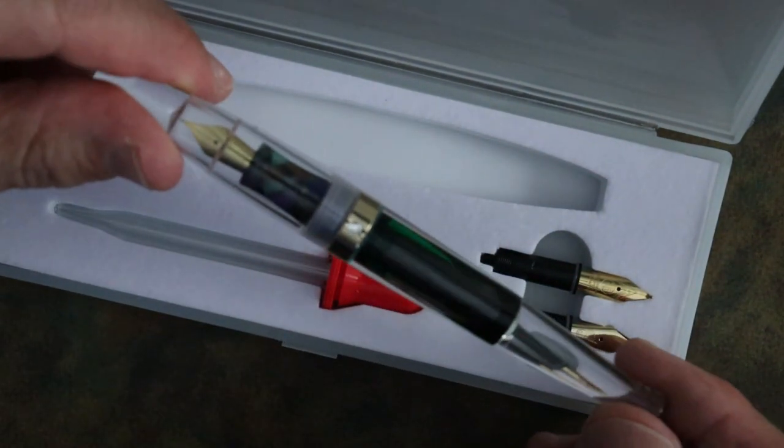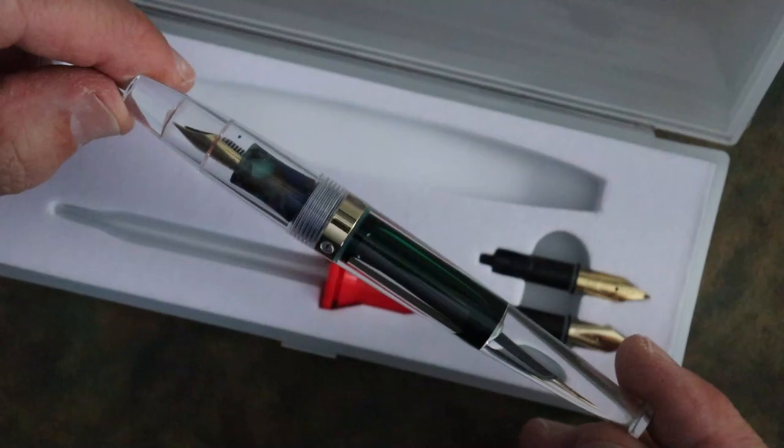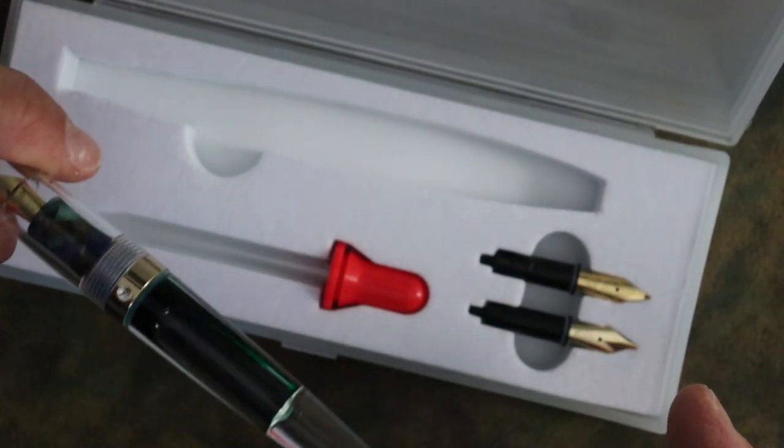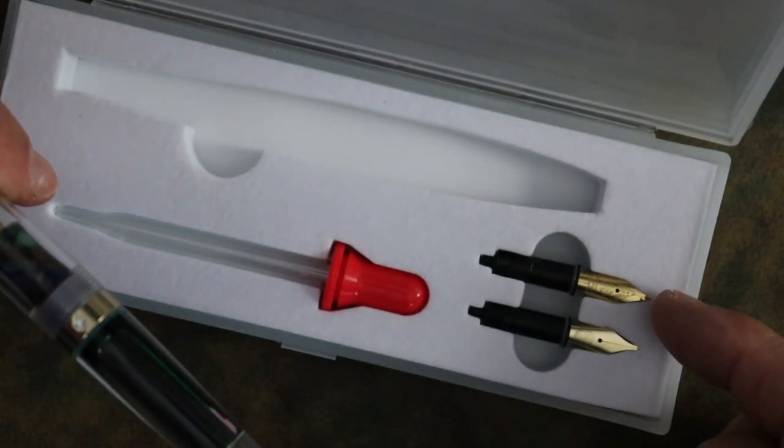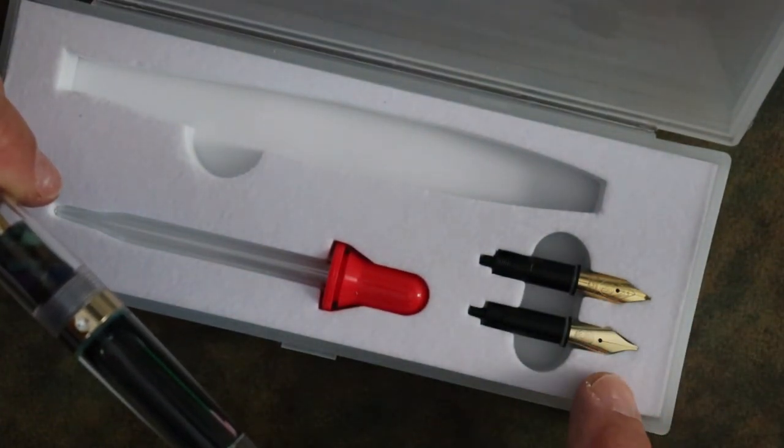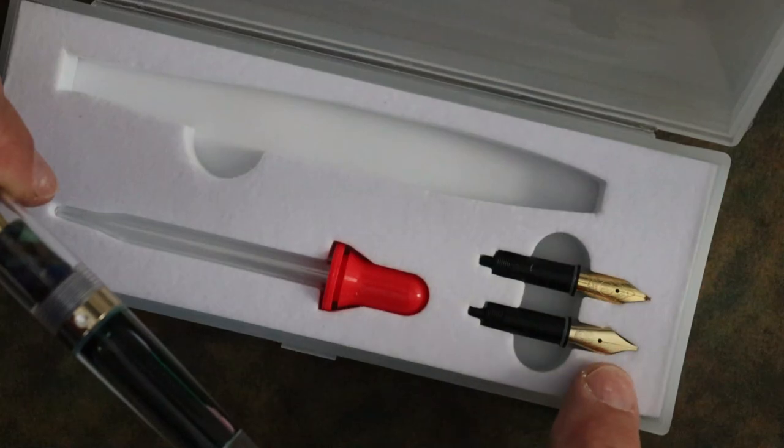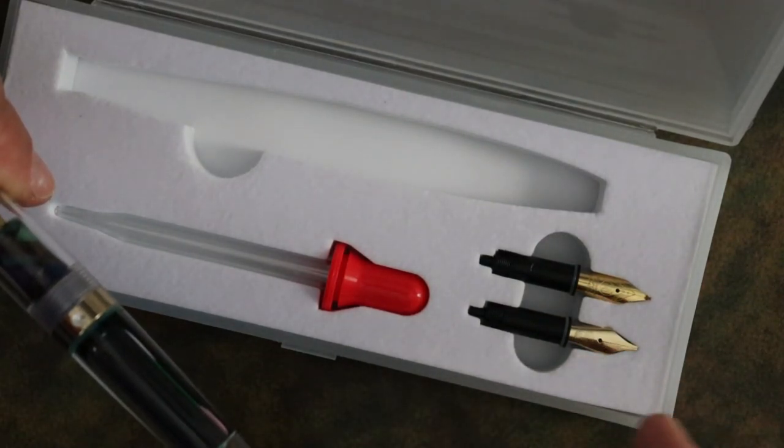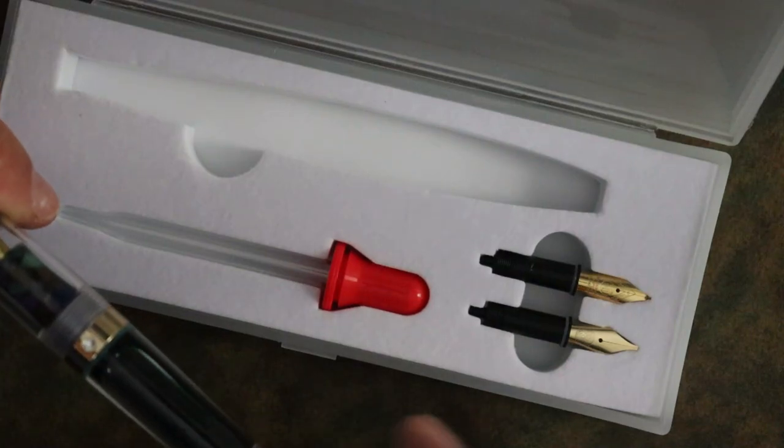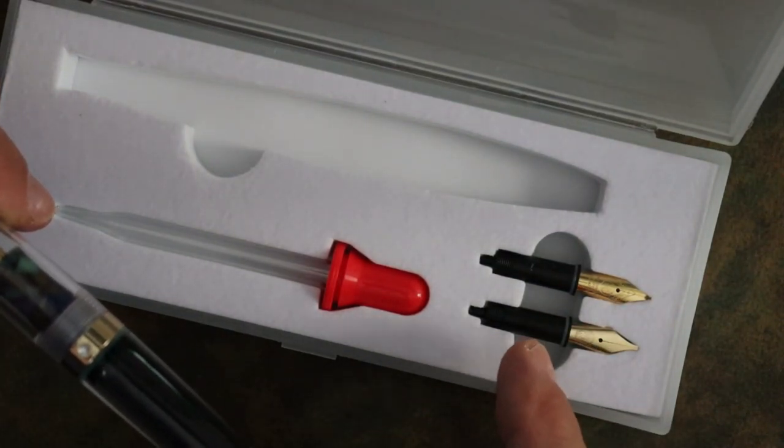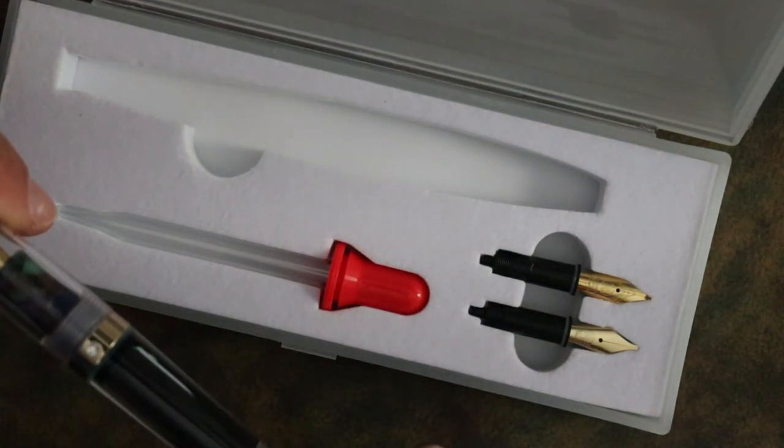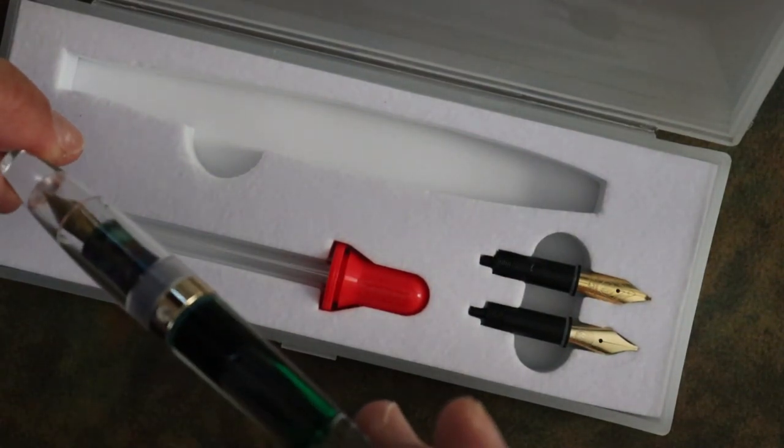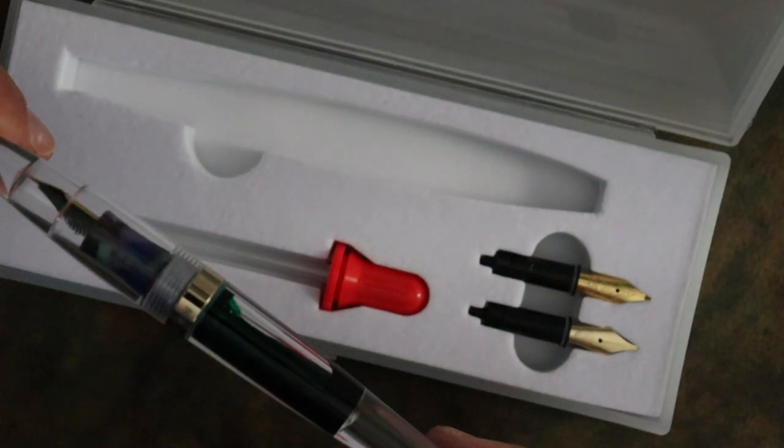Now when you order this pen, you have the option of extra fine or fine, and then they give you a fude nib as well as a 1.1 stub. So you get three nibs that screw into the grip section, so it's easy on, easy off, and pretty convenient. I'll do a writing sample with each of those.